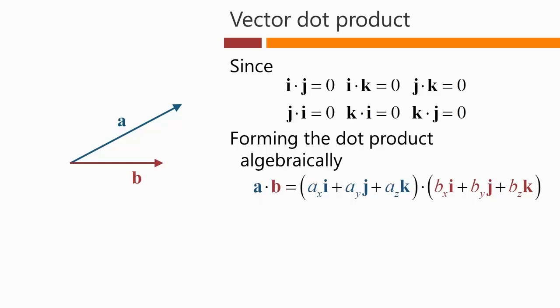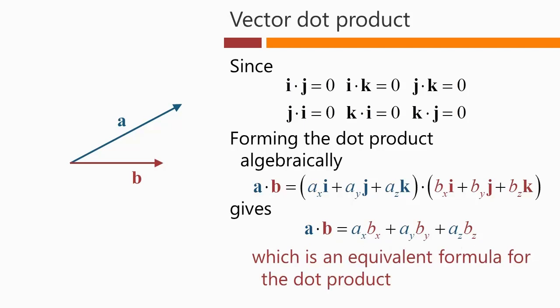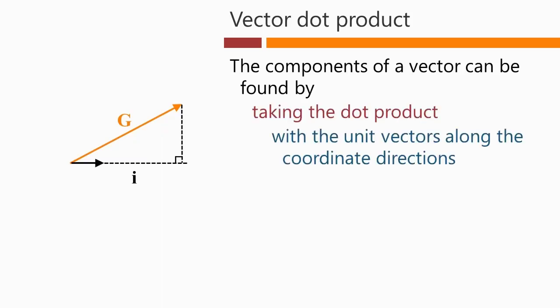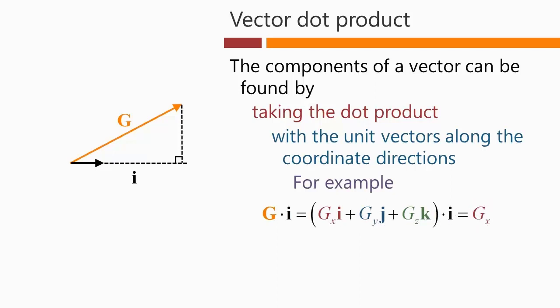Because all of these dot products are 0 for a unit vector dotted with a different unit vector, we can form the dot product algebraically. We take A dot B — this set of components dot producted into this set of components — and all we're left with is ax times bx plus ay times by plus az times bz. All of the cross terms, for example ax times i dotted into by times j, go to 0 because i dot j equals 0. The components of a vector can therefore be found by taking the dot product with the unit vectors along the coordinate directions — for example, G dot i gives us gx.